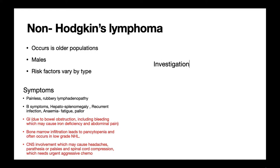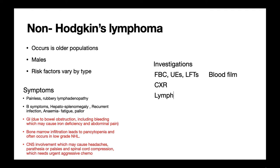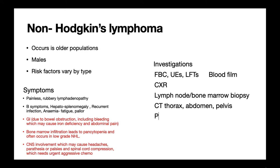Investigations for non-Hodgkin's lymphoma are very similar: a full blood count to look for anaemia or a low white cell count, baseline kidney and liver function tests, a blood film which may show a leukoerythroblastic picture, biopsies, chest X-rays, and staging with the Ann Arbor system using CT and PET CT.